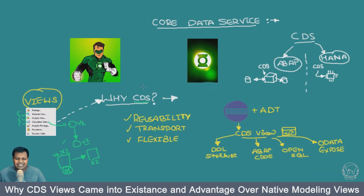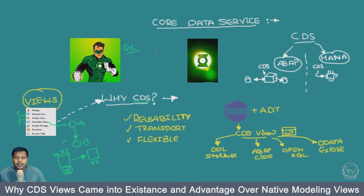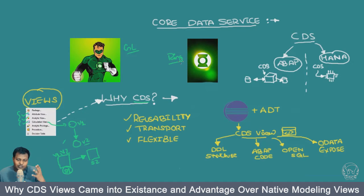Now when I talk about CDS views, I always imagine Green Lantern — that's the reason why I have put this picture here. Now what is the power of Green Lantern? Green Lantern has a ring and this ring can take any shape based on what you can imagine. So that's what I think of as a CDS view.